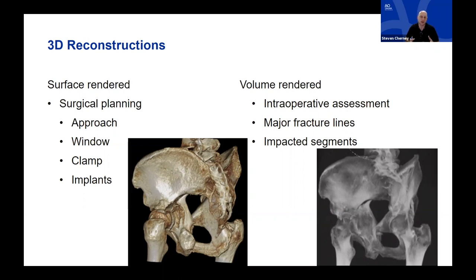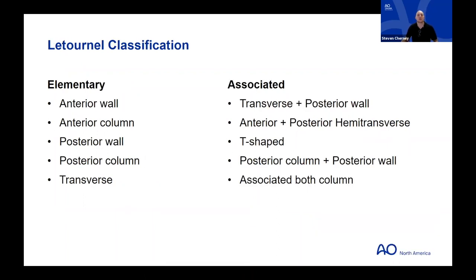We're talking about plain radiographs, Judet views, and volume-rendered images because when treating these patients in the OR, you're looking at a C-arm — a two-dimensional image — and you need to be able to correlate that with the patient's three-dimensional injuries. Now we try to fit patients into the Letournel classification, which describes 10 acetabular fracture types.